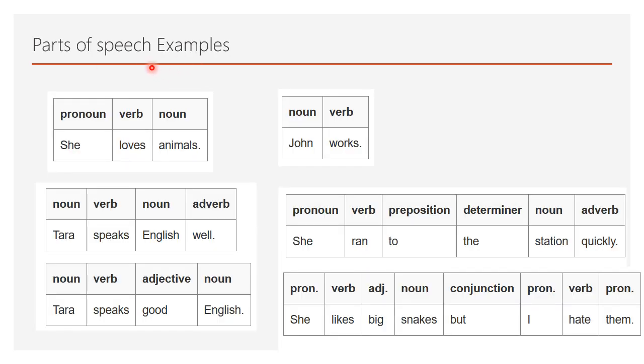Here are some examples of parts of speech. She loves animals. She is a pronoun. Love is a verb. Animals is noun. John works. John is noun. Work is verb. Tara speaks English well. Tara is the noun. Speaks verb. English noun. Well, adverb. Tara speaks good English. This good emphasizes this process. Good is the adjective here. She ran to the station quickly. She pronoun. Ran verb, to preposition, the determiner, station noun and quickly adverb. She likes big snakes but I hate them. She pronoun, like verb, big adjective, snakes noun but is the conjunction. I is the pronoun. Hate verb and them pronoun.